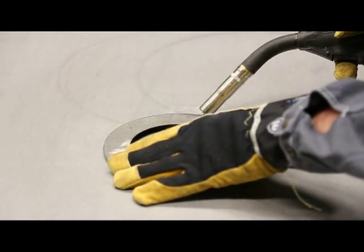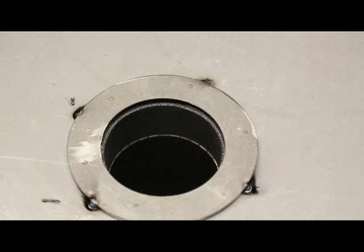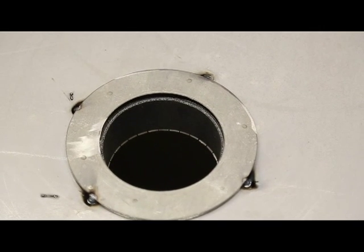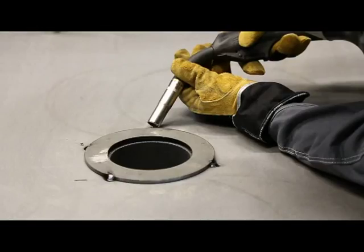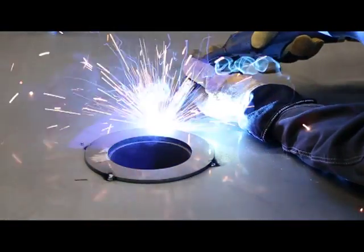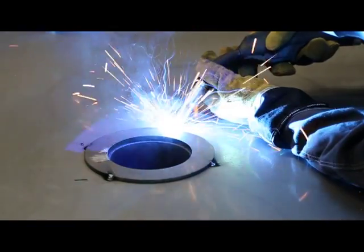Tack weld the flange of the watertight penetration seal to the structure. Make a 360 degree tight weld joint around the flange of the watertight penetration seal.